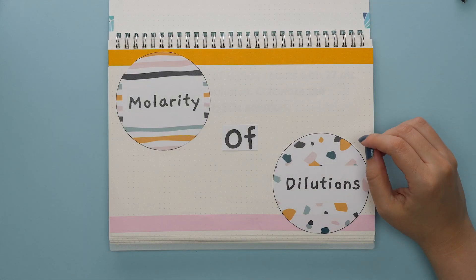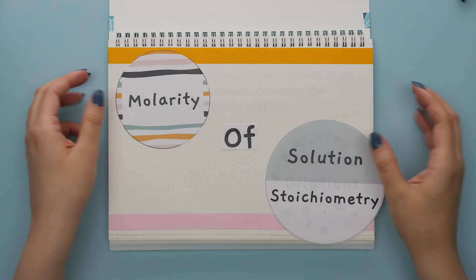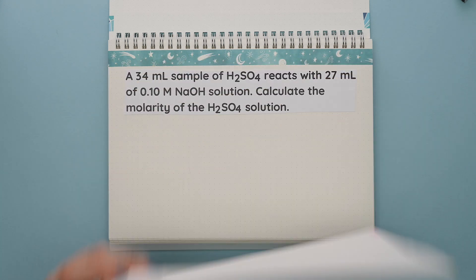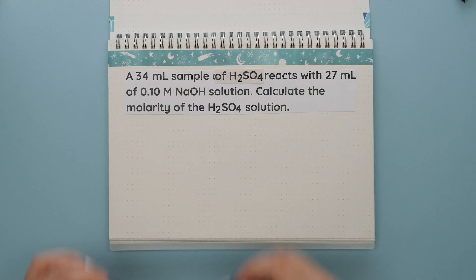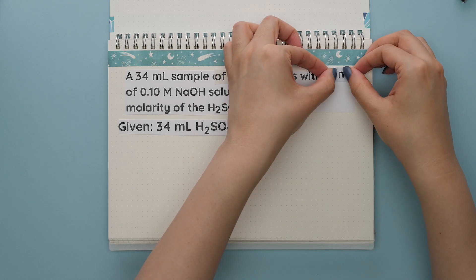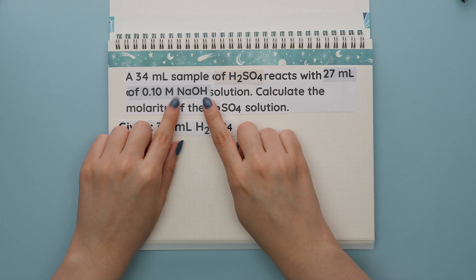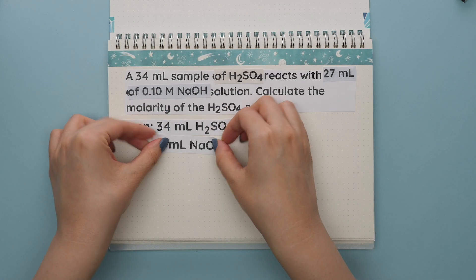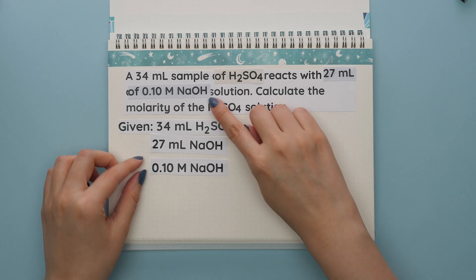Same concept applies to a molarity question, specifically solution stoichiometry. It will be really helpful to know what volume goes with what solution. So again, use the word of to help you figure it out. This question gives us 34 milliliters of H2SO4. So we know to keep these together when setting up our question. We are also given 27 milliliters of a 0.1 molar NaOH solution. This means that the 27 milliliters are of NaOH and the molarity of NaOH is 0.10.